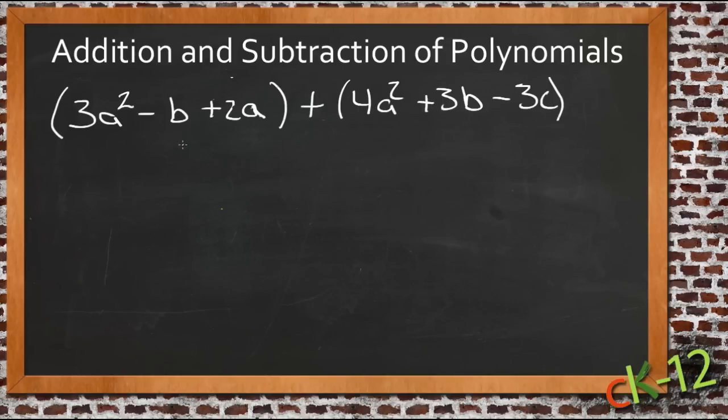You can't have, for instance, an a squared grouped with an a, because those aren't the same thing. These numbers will end up being different.